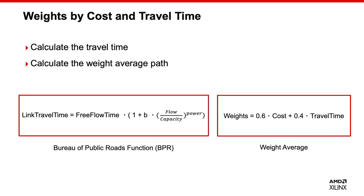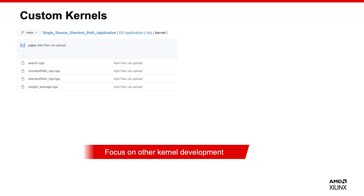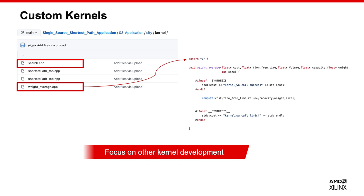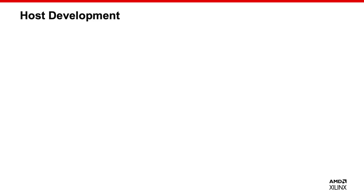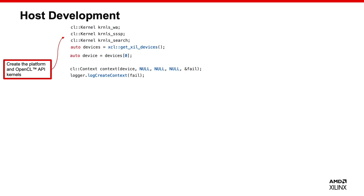This is only a reference — you can use other functions to calculate your weights. Since this computing part involves a loop, I decided to design my own weight average kernel. I design custom kernels in C++: one is a weight average kernel for the computing part, and another is a search kernel for searching results. When the accelerated part is complete, we organize the host code to use FPGA binaries with OpenCL APIs or XRT APIs. Typically there are four steps: first, create the platform and OpenCL API kernels, including kernel names, devices, and context.